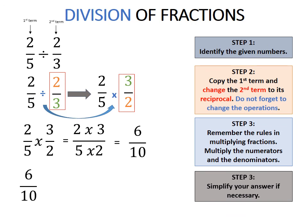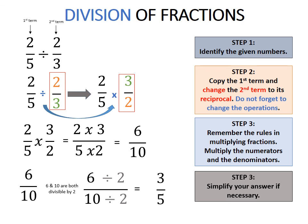6 over 10 may be the final answer, but if it is necessary to simplify, then do so. 6 and 10 are both divisible by 2: 6 divided by 2 and 10 divided by 2 equals 3 over 5. So 3 over 5 is your simplified final answer. Thank you!